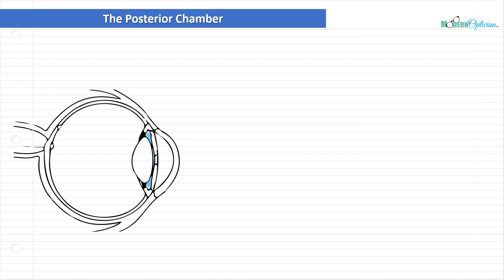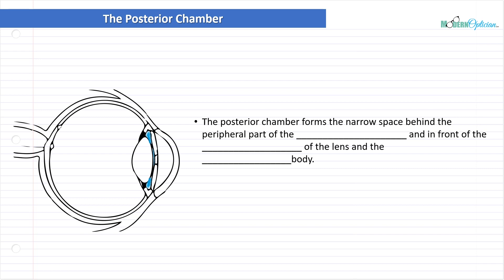Now, let's look at the posterior chamber. Let's pull out the eye and you see where I've highlighted in blue here. This is the posterior chamber. The posterior chamber forms the narrow space behind the peripheral part of the iris and in front of the anterior of the lens and the ciliary body. We know that this is the lens and the ciliary body is here. So the posterior chamber forms that area behind the iris. The posterior chamber is filled with aqueous humor.